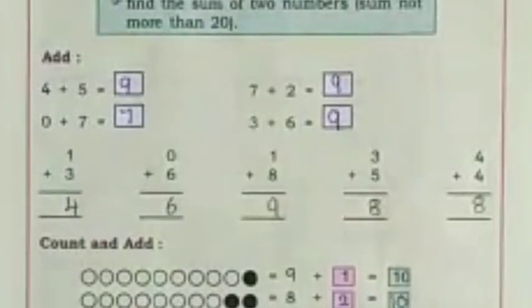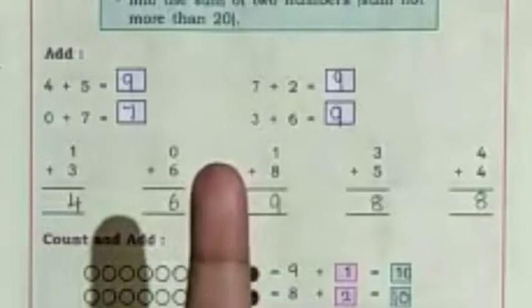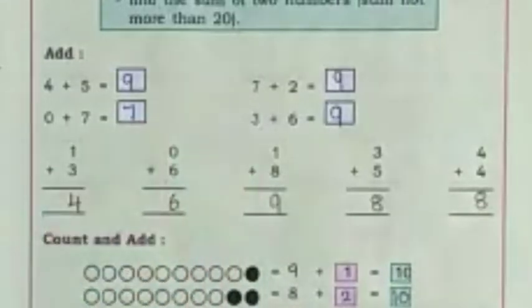Last exercise, you do by yourself. 1 plus 3. Which is the big number? 3. 3 in the mind, 1 on the finger. After 3: 4. 4 is the answer.